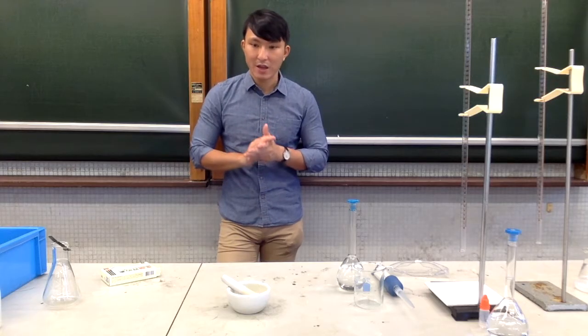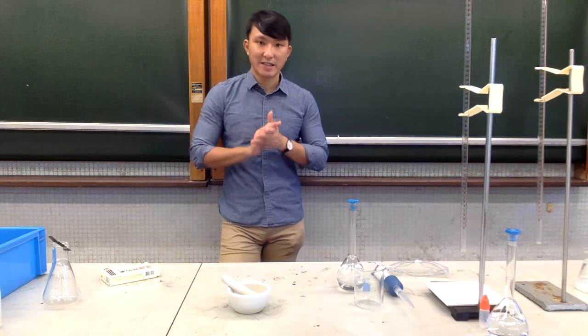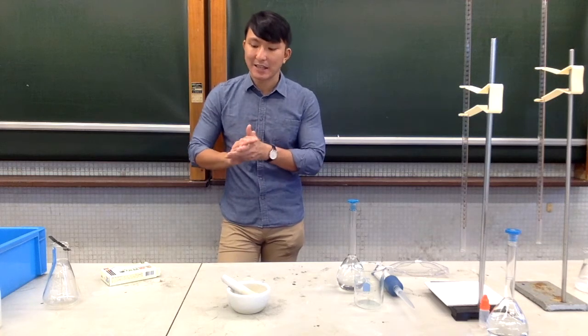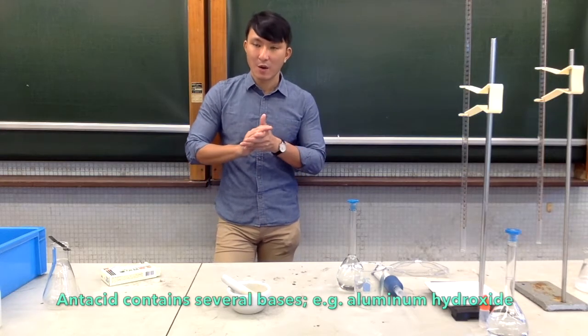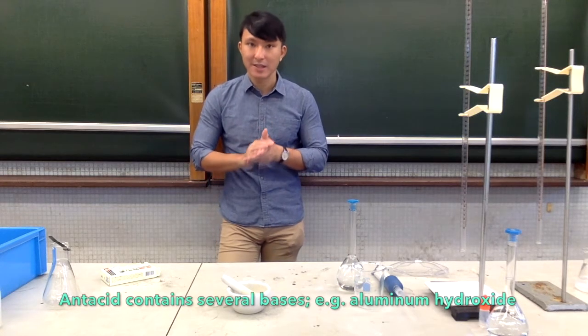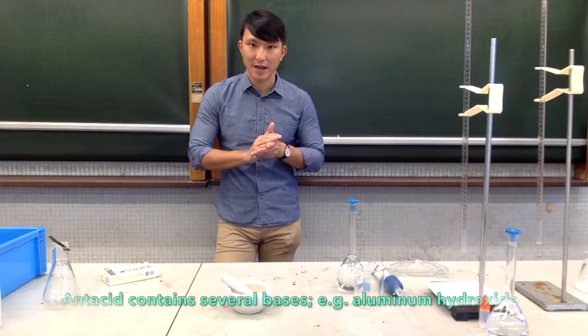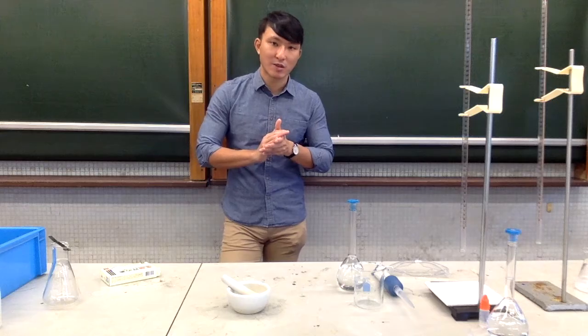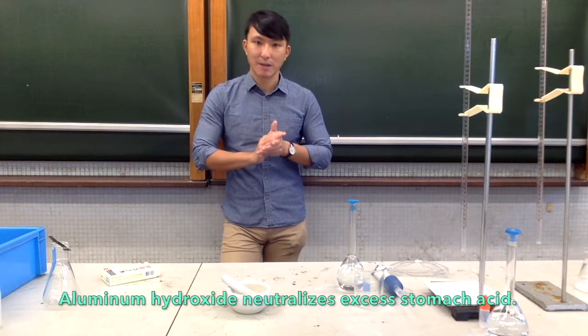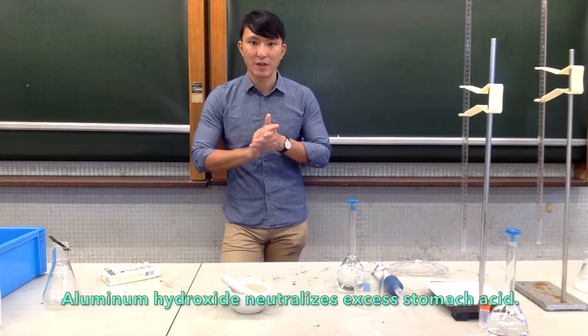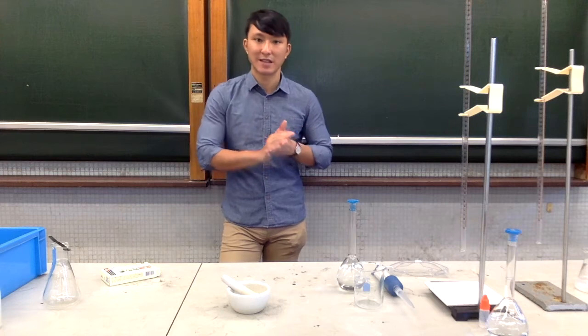So to relieve the pain, we take an antacid tablet. Inside the antacid tablet it contains several different bases, and one of the most common bases is aluminum hydroxide. The aluminum hydroxide will neutralize the excess acid in our stomach and therefore relieve the pain due to the excess stomach acid.